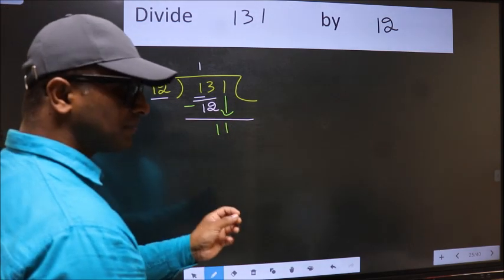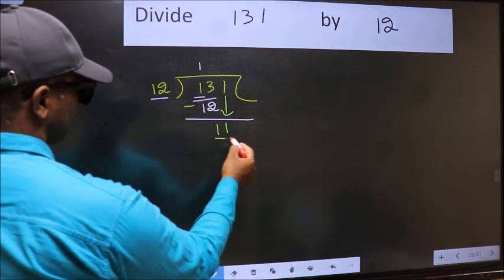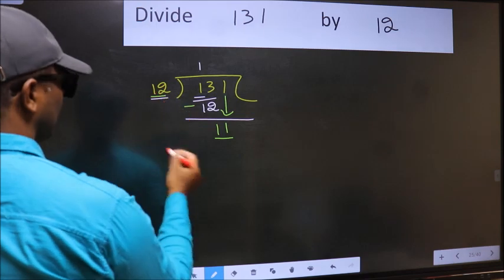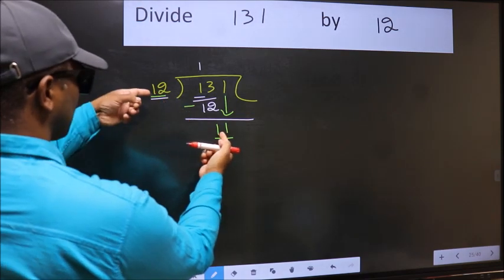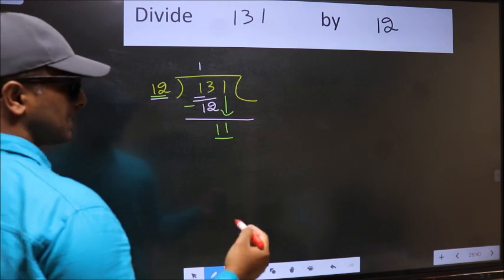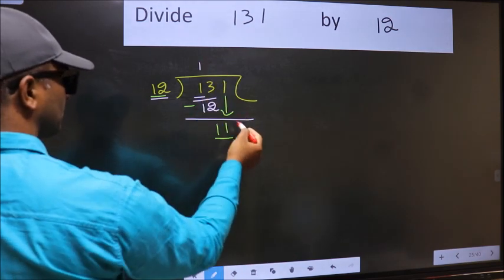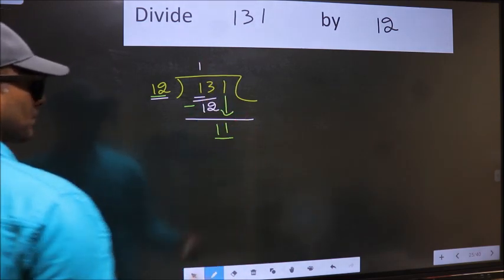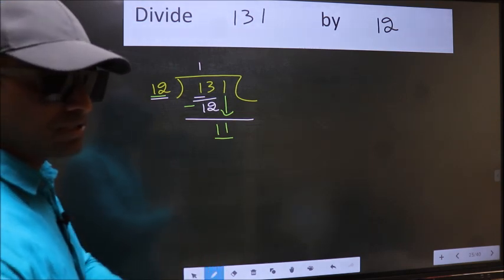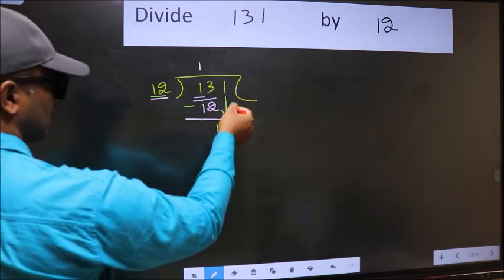After this step, the mistake happens. Here we have 11, and here 12. Since 11 is smaller than 12, what many do is they directly put a dot and take a 0 — which is wrong. Why is it wrong? Because you just brought this number down.